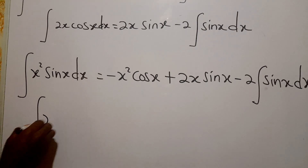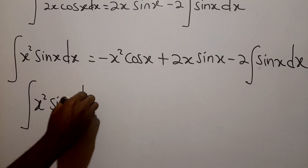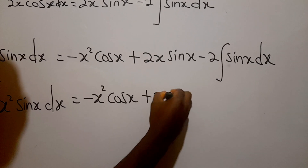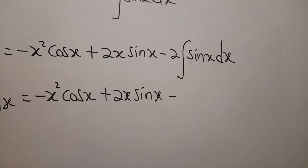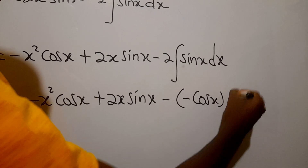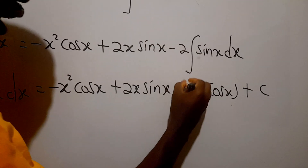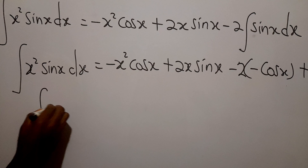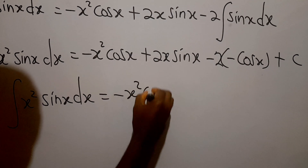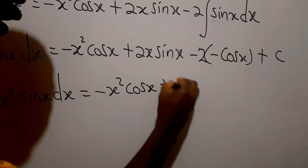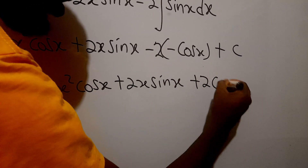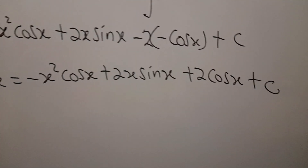So we can say the integral of x squared sine x dx is equal to negative x squared cos x plus 2x sine x. The integral of sine x is negative cos x, so minus 2 times negative cos x gives plus 2 cos x, then plus our constant of integration C. The final answer is: minus x squared cos x plus 2x sine x plus 2 cos x plus C.